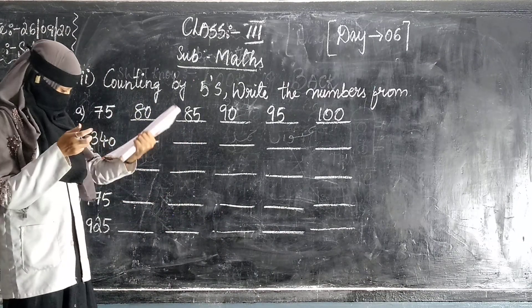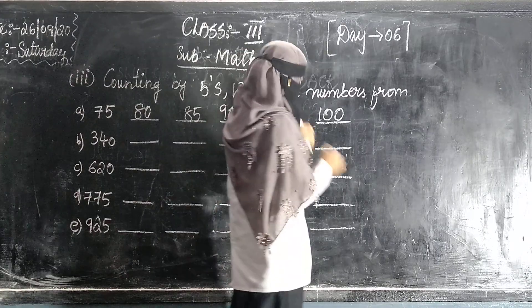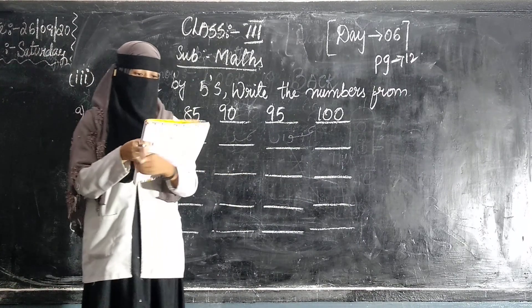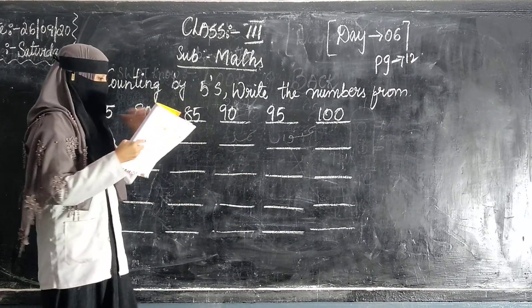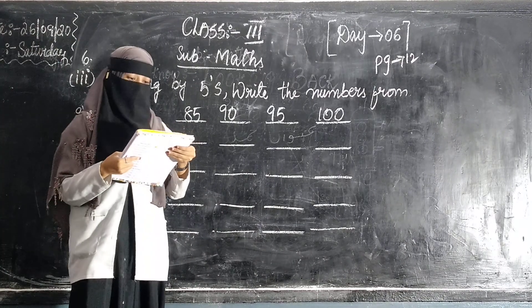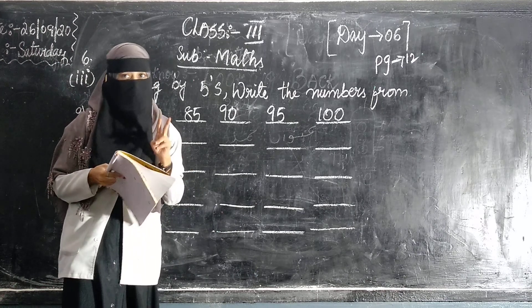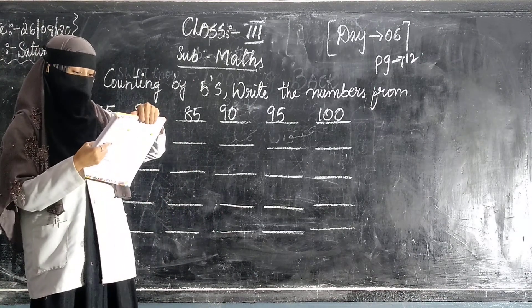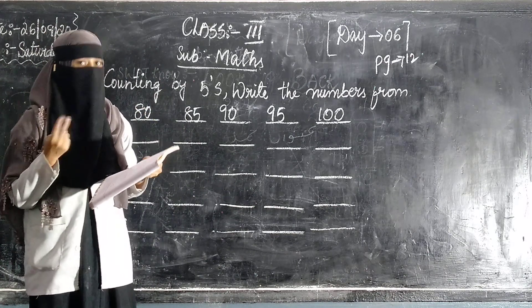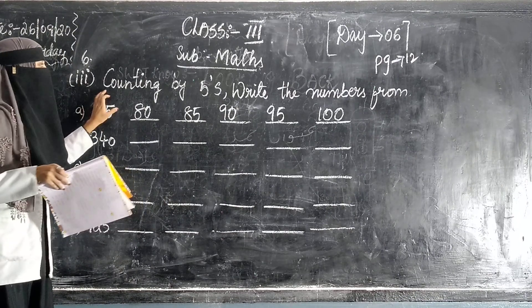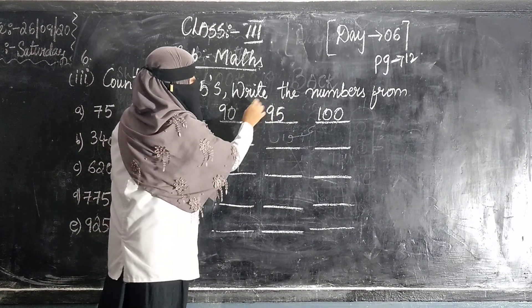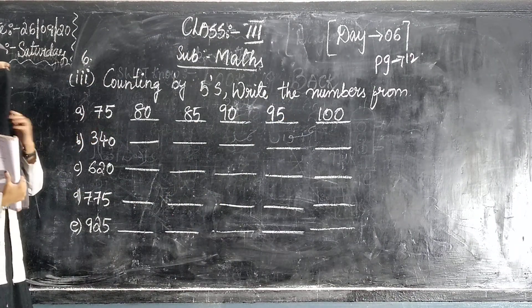Take out page number 12. Question number 6. That is skip 2 numbers. And in homework you have skipped 3 numbers. First section we have done in class, homework 2nd section. Now we are writing 3rd section. Counting by 5, write the numbers. Here we go. First one is done for you.